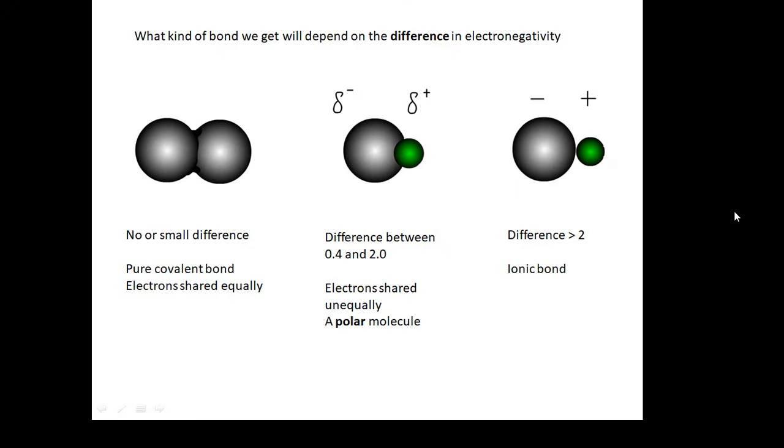Now, if there is a difference, a significant difference in electronegativity, then what you'll find is that one of the atoms gets a bigger share of the electrons. For example, in hydrogen fluoride, the fluorine atom gets a bigger share. And we end up with what we call a polar molecule. If the difference is between 0.4 and 2, we get a polar molecule. And that means that one of the atoms gets a bigger share of the electrons. And we end up with a molecule which has a negative end and a positive end. It's a polar molecule. It has a dipole, which basically means it has a negative end and a positive end.